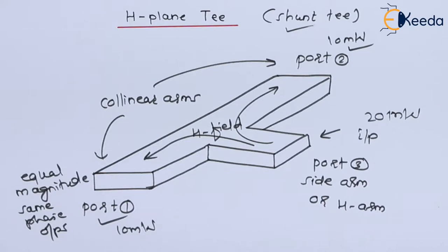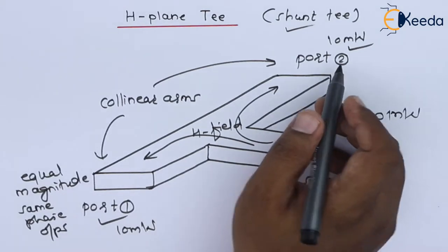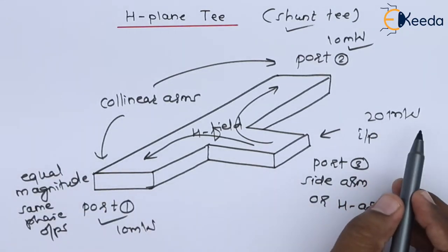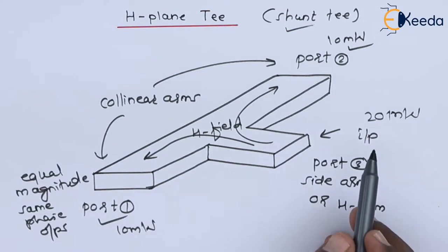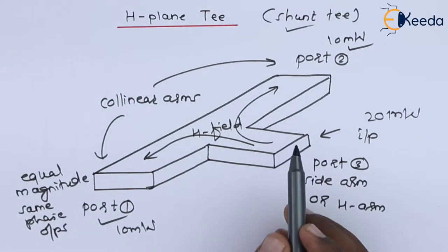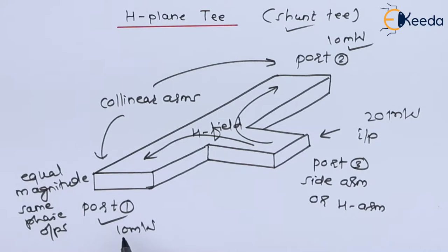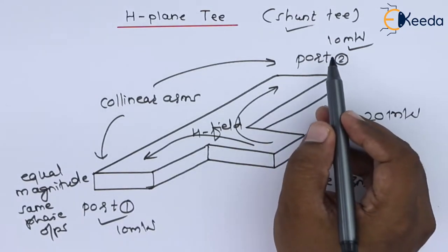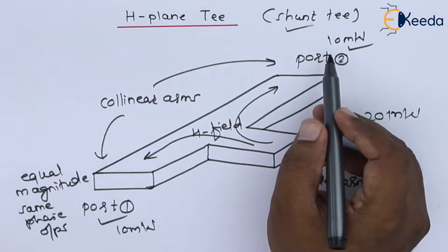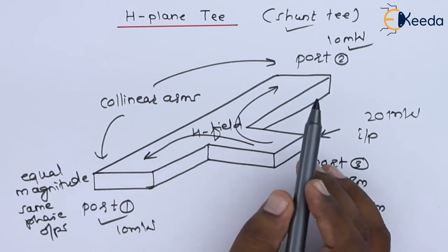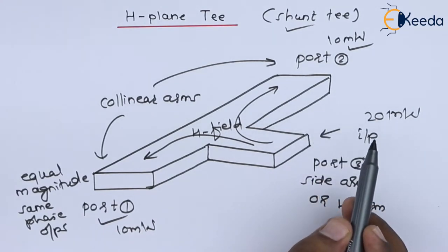When the wave cycle starts from zero going towards positive, it is the same case for port number 1 and port number 2. In comparison, for the previous waveguide junction E-plane T, if you provide 20 milliwatts to port number 3, it will give two equal halves but out of phase by 180 degrees. So for port 1 positive 10 milliwatts, you get negative 10 milliwatts at port 2 in E-plane T. Here in H-plane T there is no phase reversal.